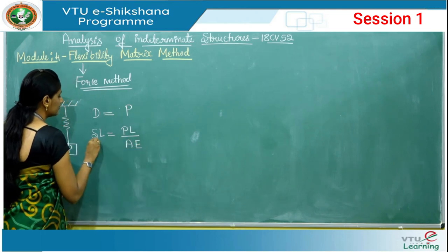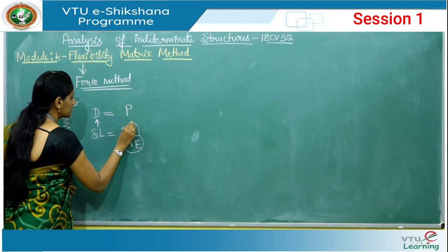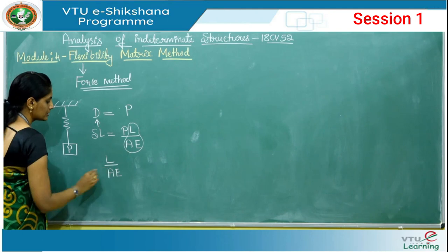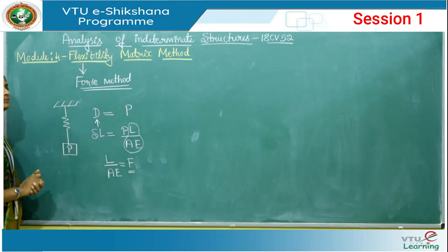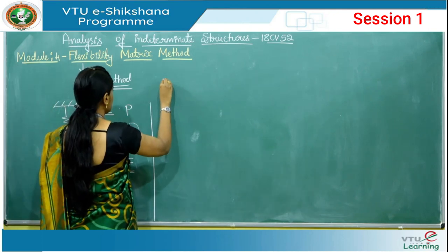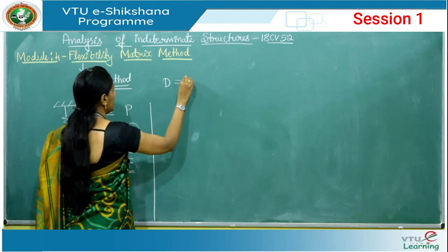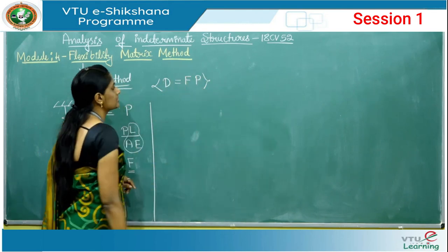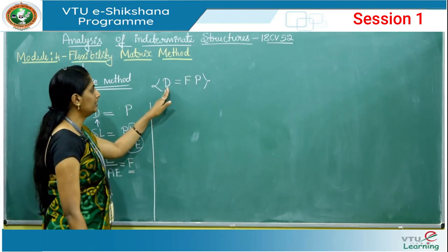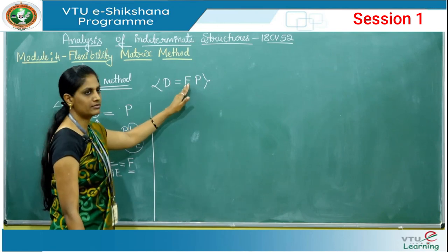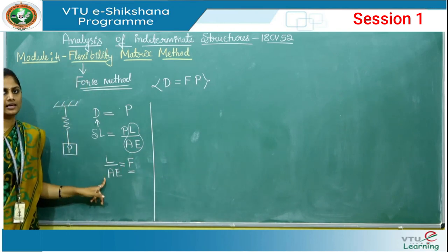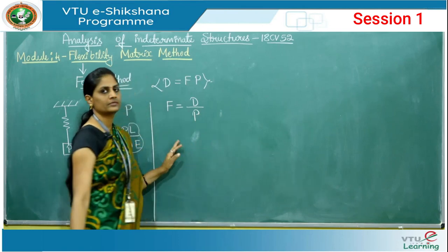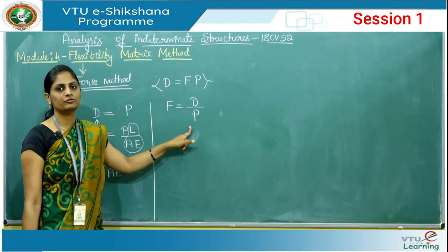In the relation delta L = PL/AE, delta L is the displacement, L is the length, A is the area of cross-section, and E is the elastic modulus. The term L/AE can be equated to a coefficient called F. So delta L equals PF, and in place of delta we write D and in place of L/AE we use F. This gives the basic equation of the flexibility matrix: D = F × P, where D is displacement, P is applied force, and F is the flexibility coefficient equal to L/AE. The flexibility coefficient F is defined as displacement per unit force applied, that is F = D/P.